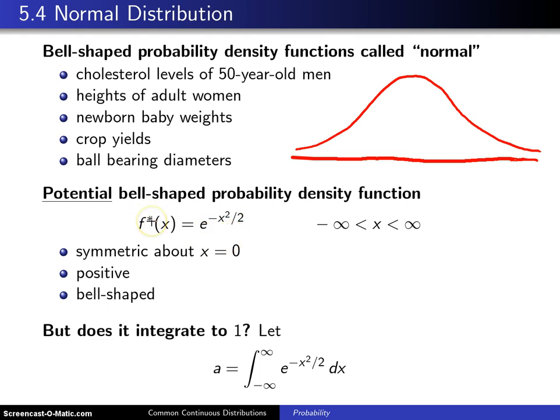The star here is just a reminder that this may not work out, and in fact it won't—it needs a constant out front. But the support here will go from minus infinity to infinity, and that's why the axis was drawn in this fashion.